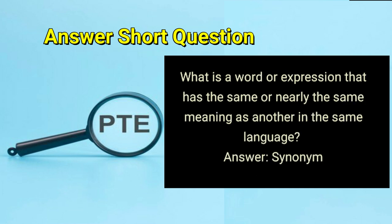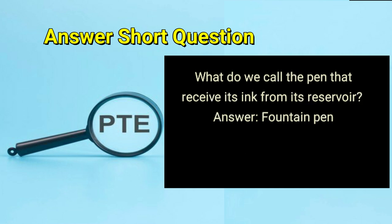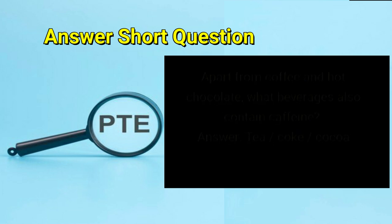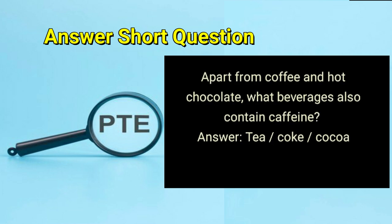What is a word or expression that has the same or nearly the same meaning as another in the same language? Answer: synonym. What do we call the pen that receives its ink from its reservoir? Answer: fountain pen. Apart from coffee and hot chocolate, what beverages also contain caffeine? Answer: tea, or coke, or cocoa.